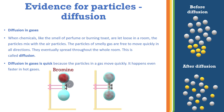Diffusion happens even faster in hot gases. The more temperature you provide, the more energy you provide, the more kinetic energy the gas particles gain, the faster they move, the faster they spread, and the faster the rate of diffusion. In gases, particles move randomly from place to place, colliding with each other or with their container, changing direction, and eventually spreading through the whole container.